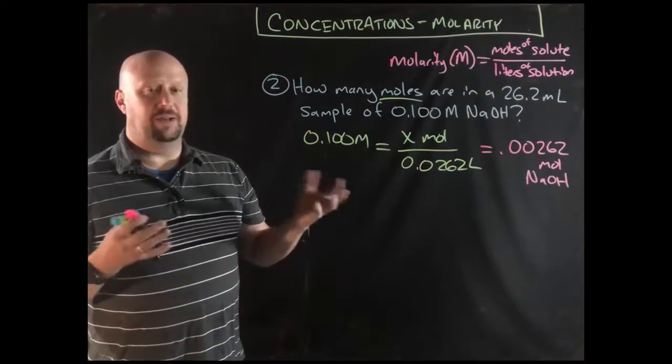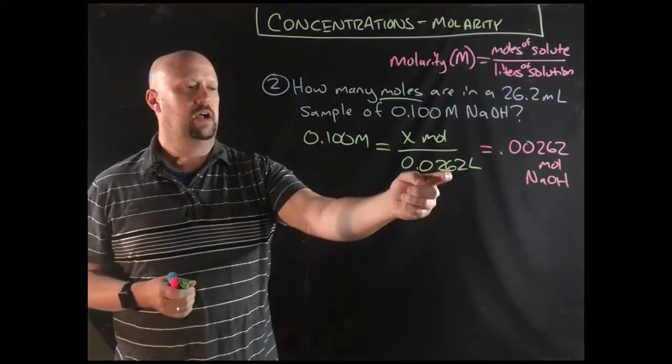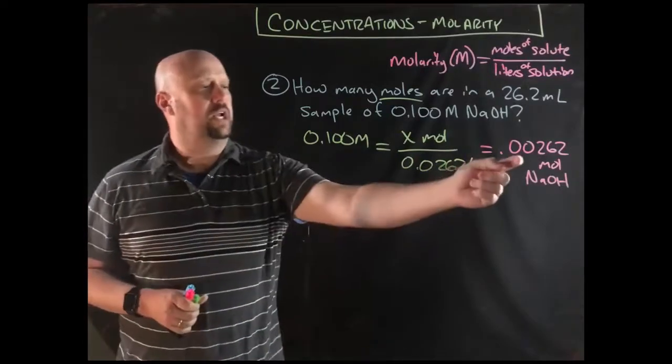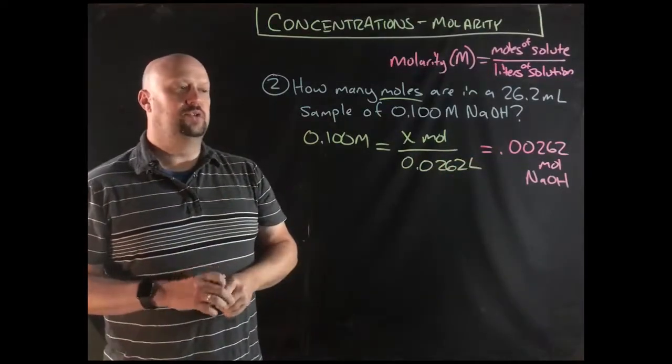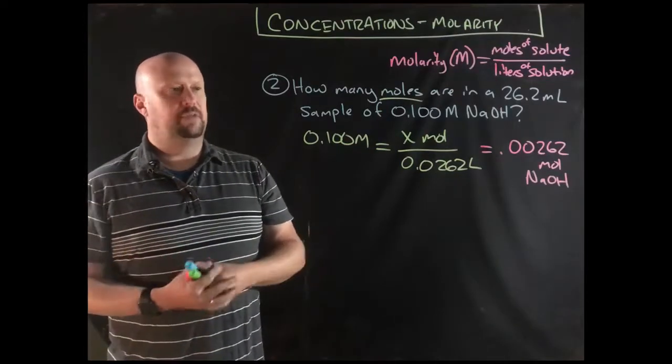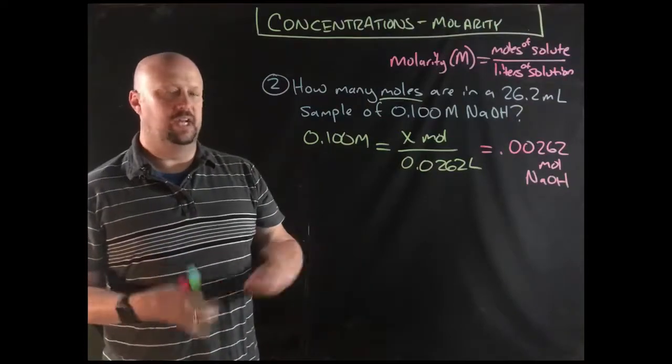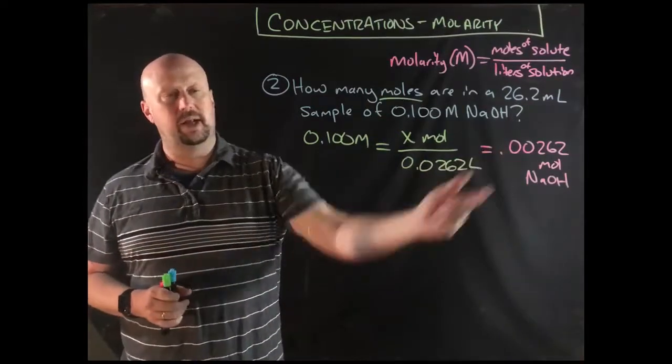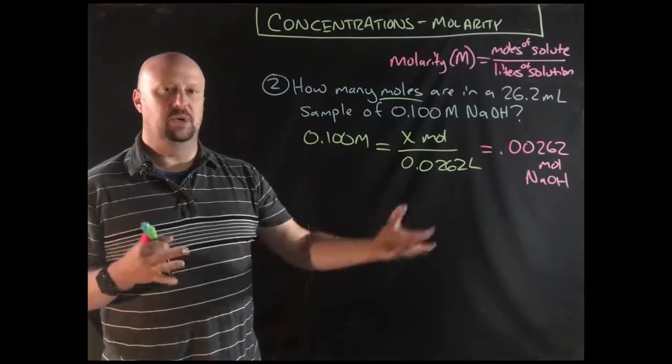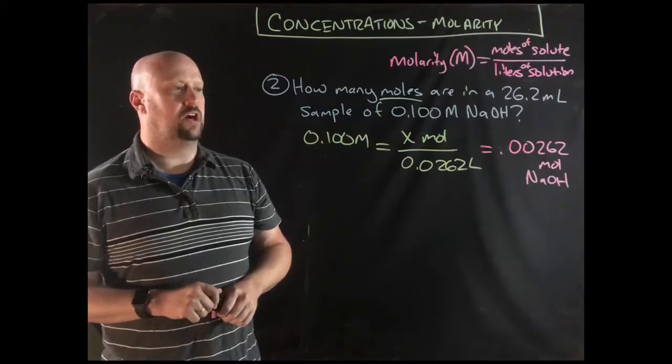Then we're just going to plug that into our calculator. When I said punch that in your calculator, obviously there's a step of algebra to be done there. Multiply that times that. That gets x by itself. We're going to get 0.00262 moles of sodium hydroxide. If the problem had asked what it very often would ask, which is what's the mass or how much of it do you need and you needed it in grams, you would just take that number, do a quick conversion with the molar mass of sodium hydroxide and you would get the grams that you need.